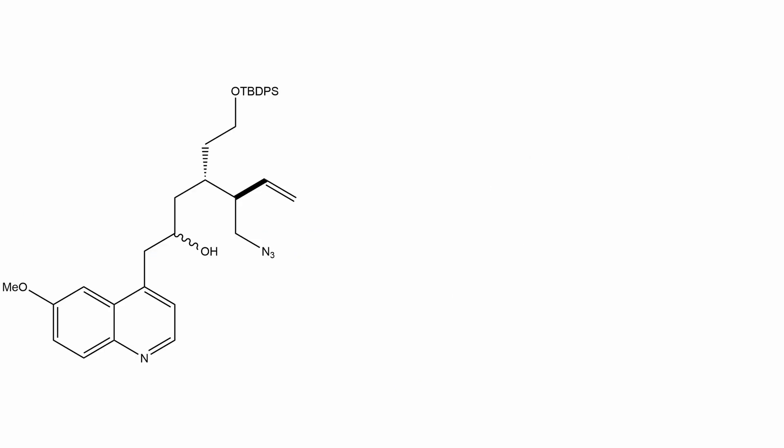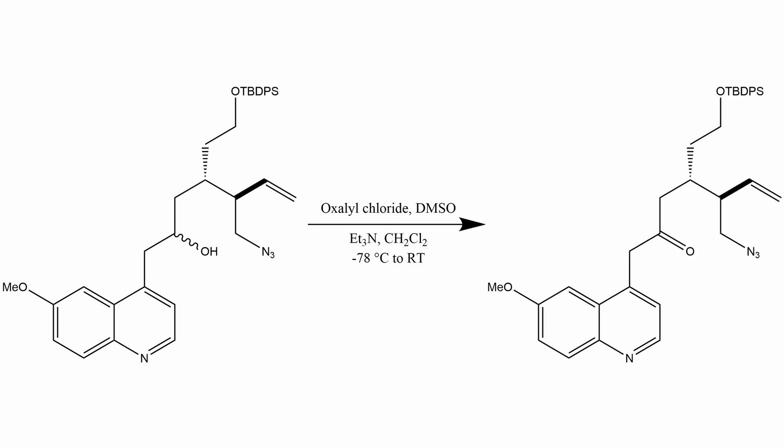So at some point during the synthesis, the group ends up with this intermediate, where we have a mixture of stereoisomers of this secondary alcohol. Then they used the exact same conditions that we just discussed with the Swern oxidation, so a solution of oxalyl chloride and DMSO, and also triethylamine in dichloromethane as a solvent, and taken this reaction from minus 78°C to room temperature.